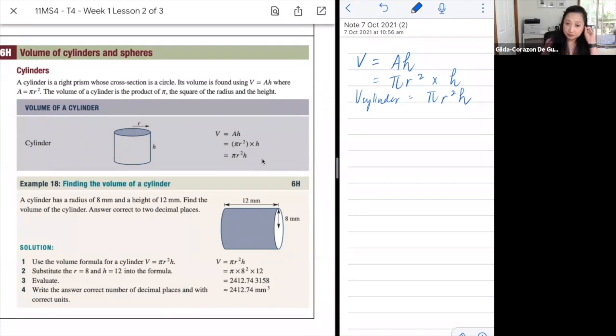Does that make sense? Is it easy to remember? So it's still AH. We didn't change anything or we didn't introduce anything new, right? But it's just that we just need to replace the area, the formula for the area of the circle, which is pi r squared. So the formula for the volume of the cylinder is pi r squared h.